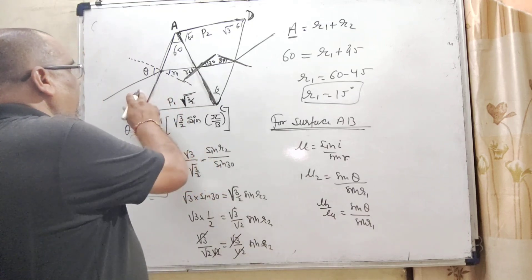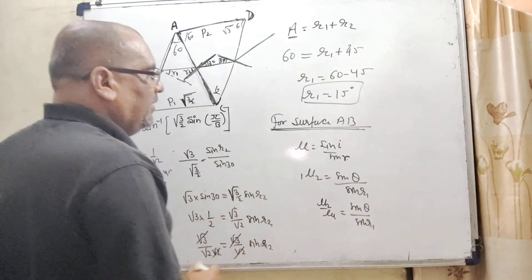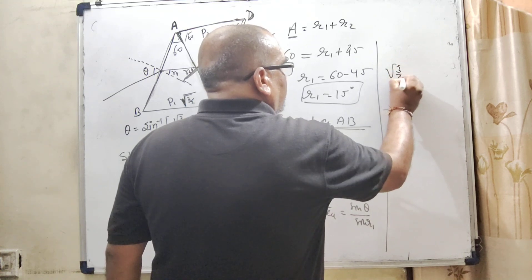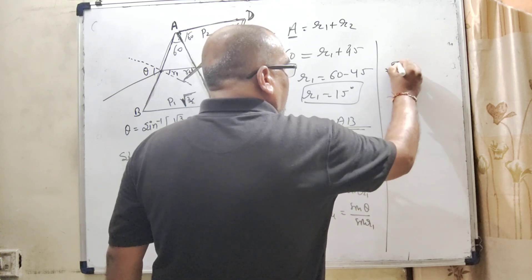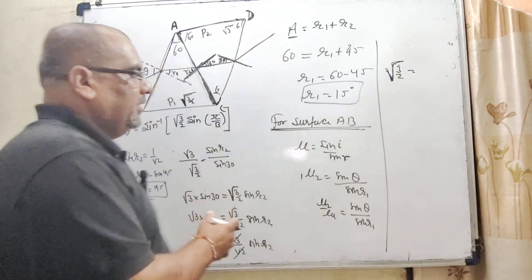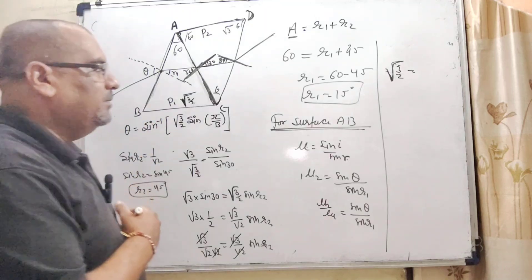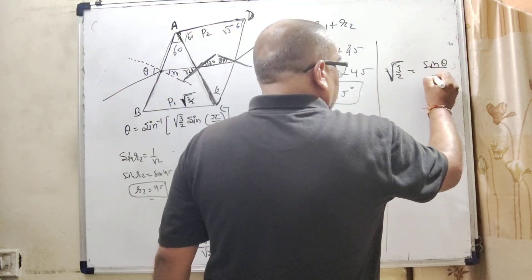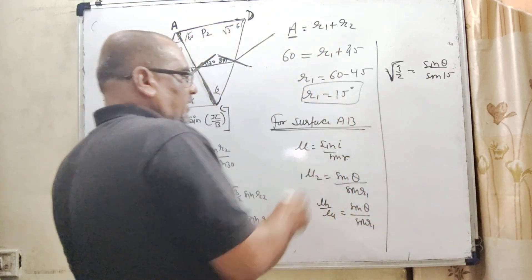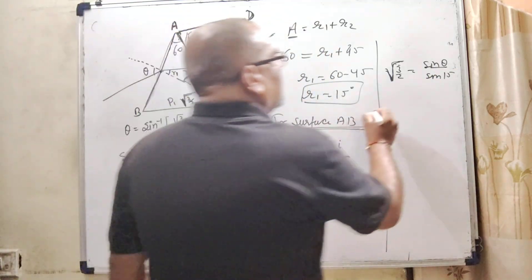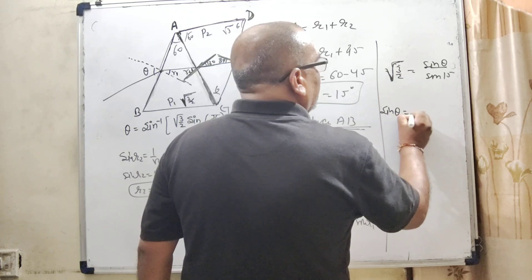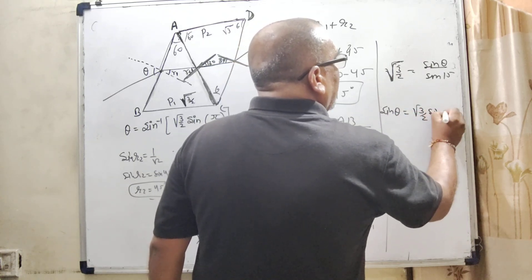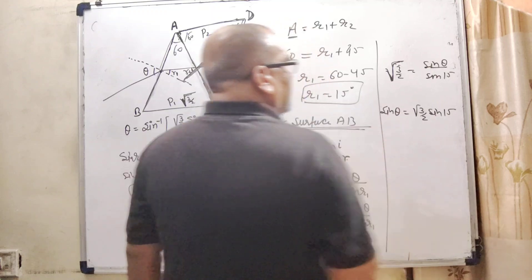Here mu 2, this means first medium and second medium. Here given that root 3 by 2 whole root, and mu 1 is 1. And sin theta, here sin 15 degrees because R1 is 15. So sin theta is equal to root 3 by 2 sin 15.